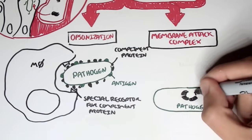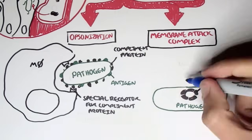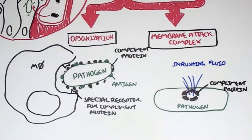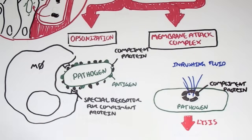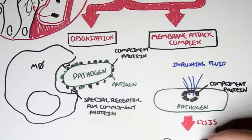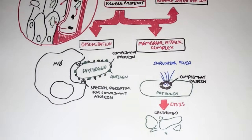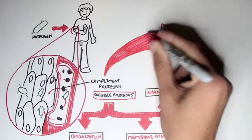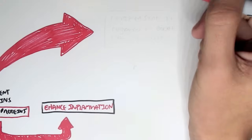Complement proteins can also make a membrane attack complex. A membrane attack complex is essentially when a group of complement proteins makes a hole in a pathogen, which causes inrushing fluids, creating a disbalance in osmolarity, which causes the pathogen to lyse — to be destroyed. We will see later on how complement proteins initiate opsonisation, the membrane attack complex, and enhance inflammation. But for now, let's see where complement proteins come from.